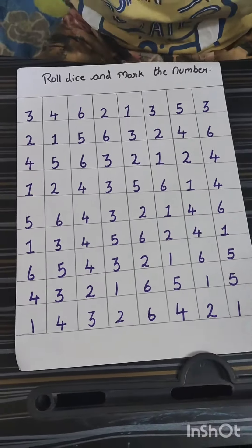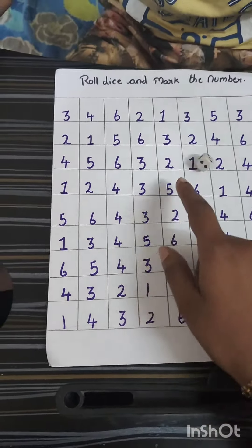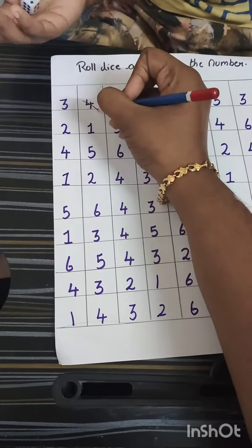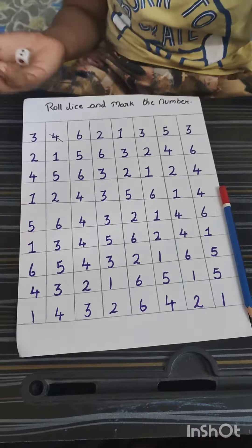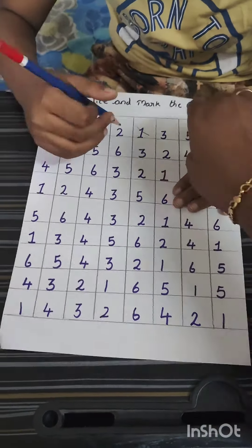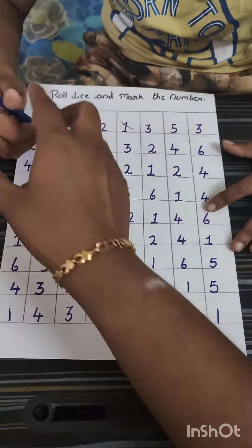Okay, this is our last worksheet. You have to roll the dice. What is it? Four. So find four from the first line, second line, any line, and you have to cut. Okay, now your turn. You can play this game in a turn. One, cut the one. My turn. One, let me cut the one.